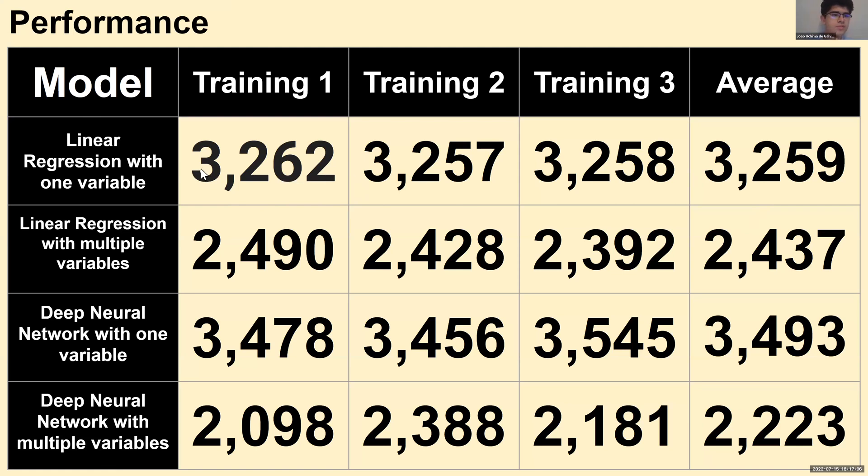For the first model, the regression one variable, we got an MAE of 3,259. For the second one, we got an MAE of 2,437. For the third one, we got an MAE of 3,493. And for the best one, which was deep neural networks with multiple variables, we got an average MAE of 2,223.